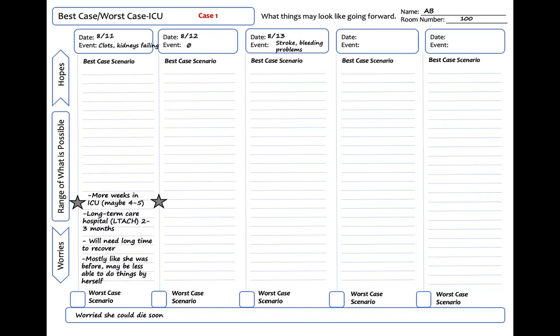Unfortunately, by 8-13, things have changed for the worse. I chose 'stroke and bleeding problems' as this sums up her most serious events from yesterday. When patients decline like this, this is an opportunity for clinicians to discuss continuation of life-sustaining treatments and poor prognosis. Sometimes surrogates will make a decision to withdraw or withhold life-supporting treatments, and the patient will die rather than progress to this point. Some families will not consent to withdrawal of life-supporting treatments, even though the clinical team has expressed their concerns that the patient is dying. Rather than repeatedly telling the family she is dying, we can focus on what we are hoping for now — that we will be able to keep her alive for a few more days. I lower her star on 8-13 as we are trending towards the worst-case scenario. Over time, uncertainty is decreasing and the plausible story of recovery is less and less likely.